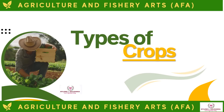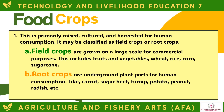The first type of crop is food crops, primarily raised, cultured, and harvested for human consumption. They may be classified as field crops or root crops. Field crops are grown on a large scale for commercial purposes, including fruits and vegetables, wheat, rice, corn, and sugarcane. Root crops are underground plant parts for human consumption, like carrot, sugar beet, turnip, potato, peanut, and radish.